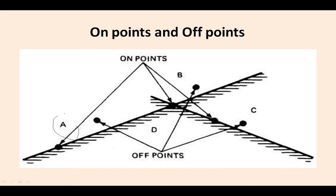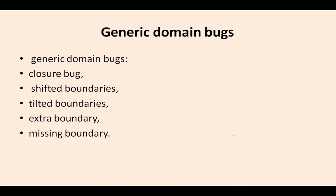These are on points — points that lie directly on boundary B. Off points are the points adjacent to the boundary. We can clearly differentiate on points and off points: points adjacent to the boundary are called off points, and points directly on the boundary are called on points.